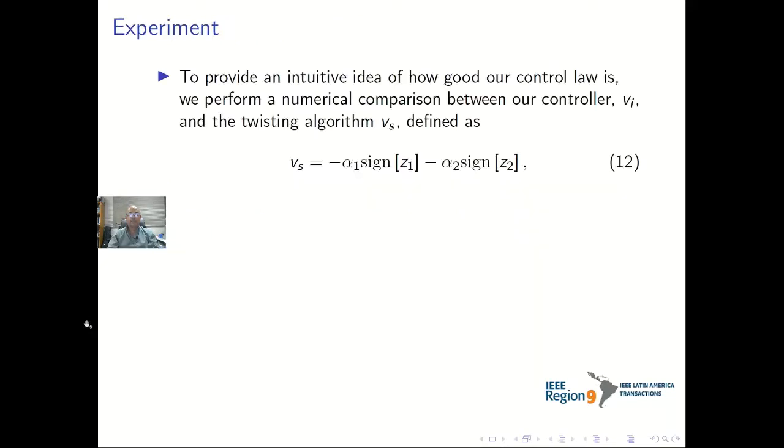Experiment. To provide an intuitive idea of how good our control law is, we perform a numerical comparison between our controller, Vi, and the twisting algorithm, Vs, defined in equation 12. The external perturbation is set as in equation 13.